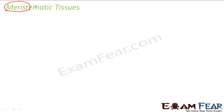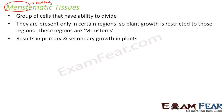Let me give you a hint about the name 'meristematic.' This term is derived from a Greek word 'merist,' which actually means divided. So can you guess what these tissues are going to be? Something which can divide — simple to remember. Merist means divided, so something which can divide should be meristematic tissue. The group of cells that have the ability to divide are meristematic tissues.